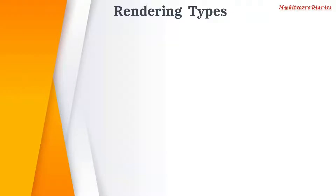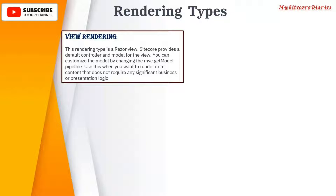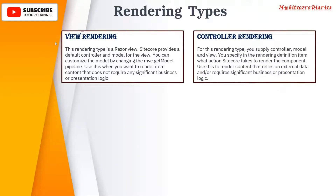There are two major rendering types. The first is view rendering and the second is controller rendering. View rendering is the Razor view — it is a view only. It provides a default controller and model for the view.